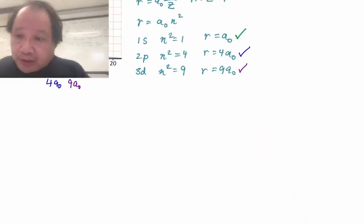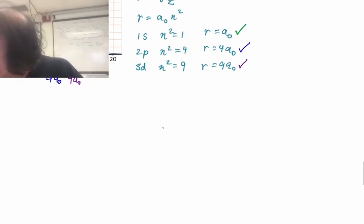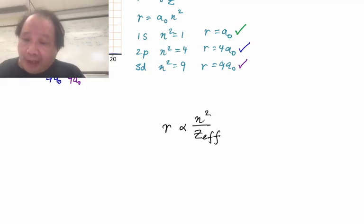The extended Bohr model. So let's do that here. In the extended Bohr model, r is proportional to n squared over z effective. And let's look at it, for example, at the 2s.